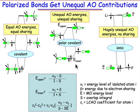Now look at the energy of the lower level. e-lower is most closely associated with the atomic orbital which it's closest to in energy — in this case, that's the energy of the fluorine atomic orbital.